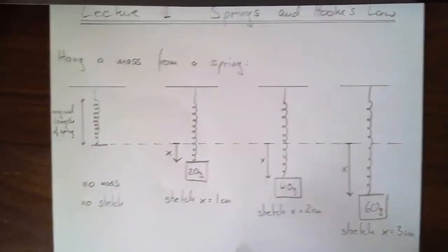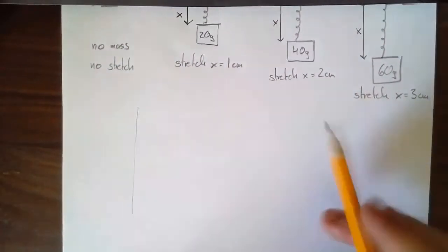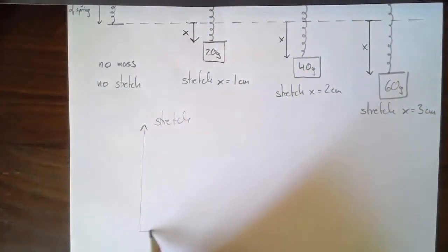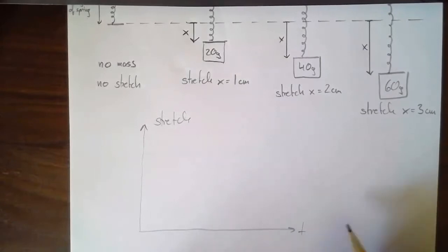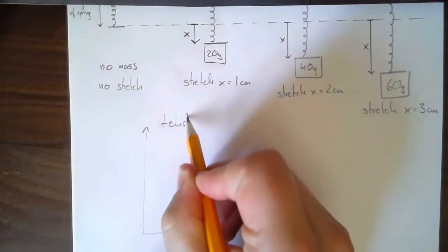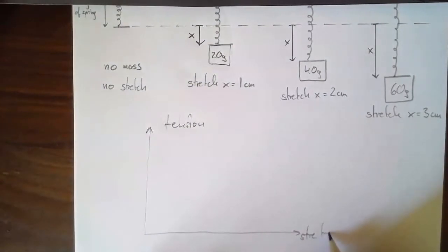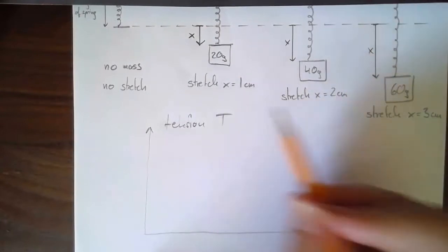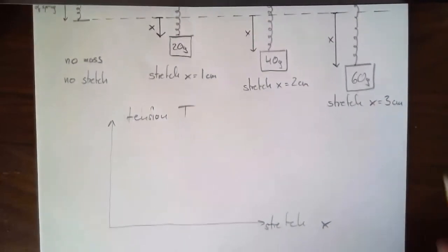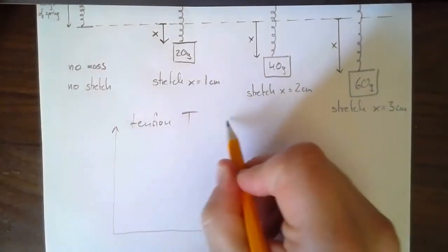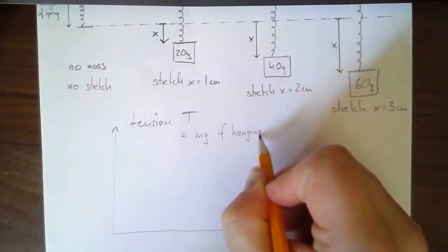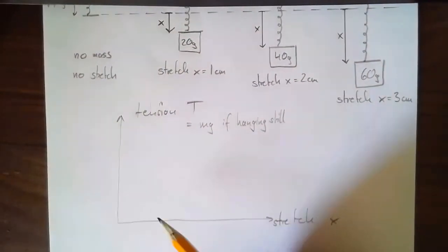Let me plot this on a graph with the tension on the vertical axis and the stretch x on the horizontal axis. When hanging at rest, the tension always equals the weight, so tension equals mg. When there's no mass hanging, there's no stretch, so the origin (0, 0) is one point on the graph.